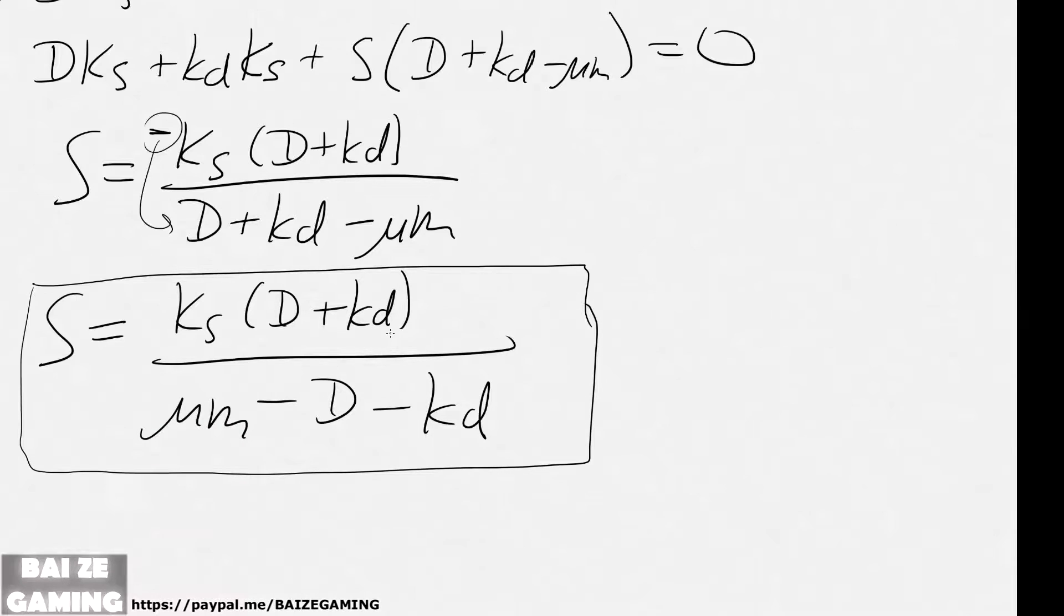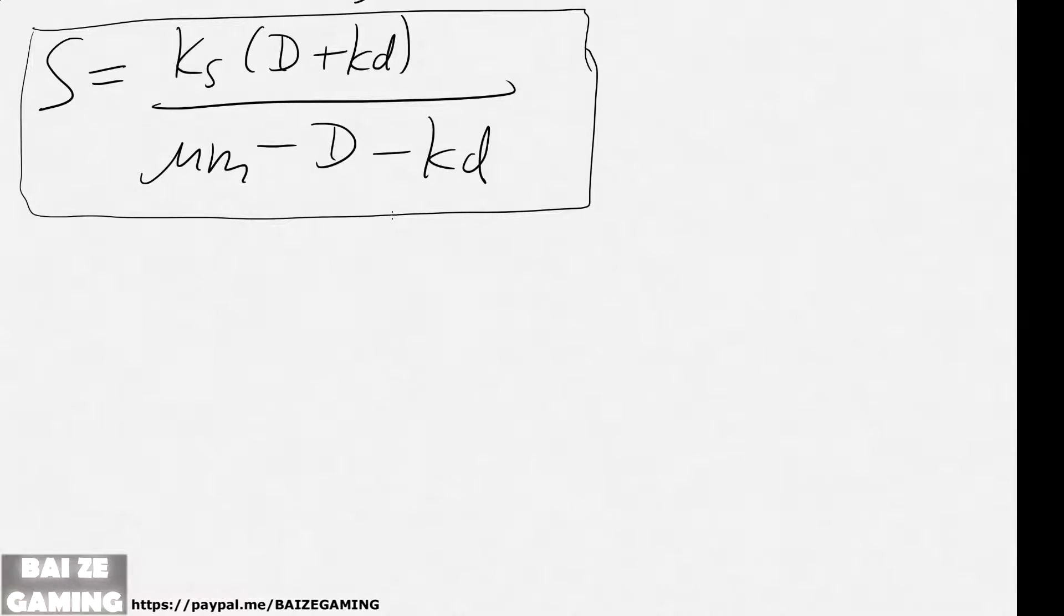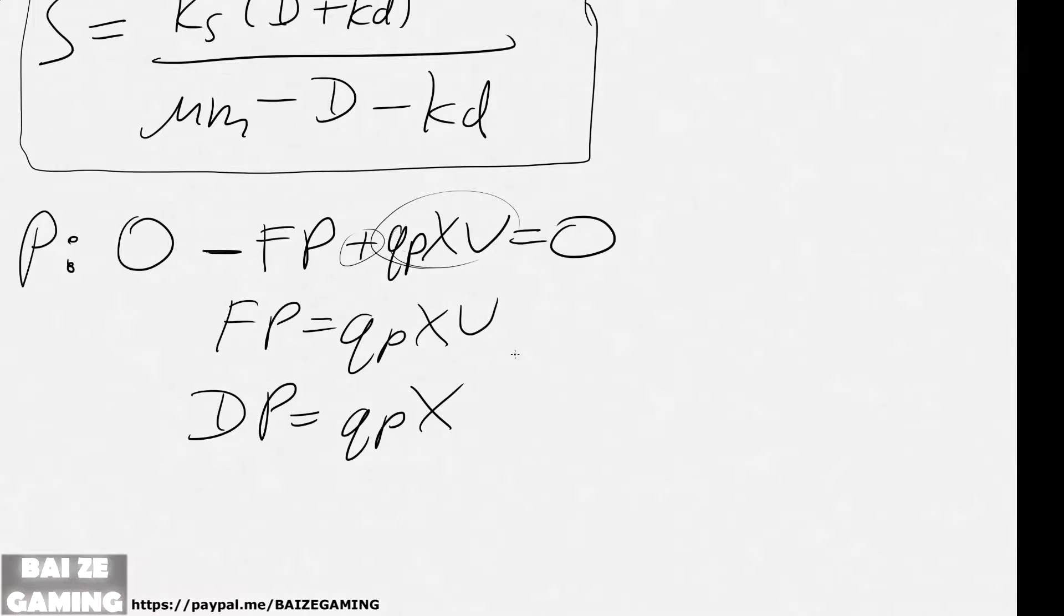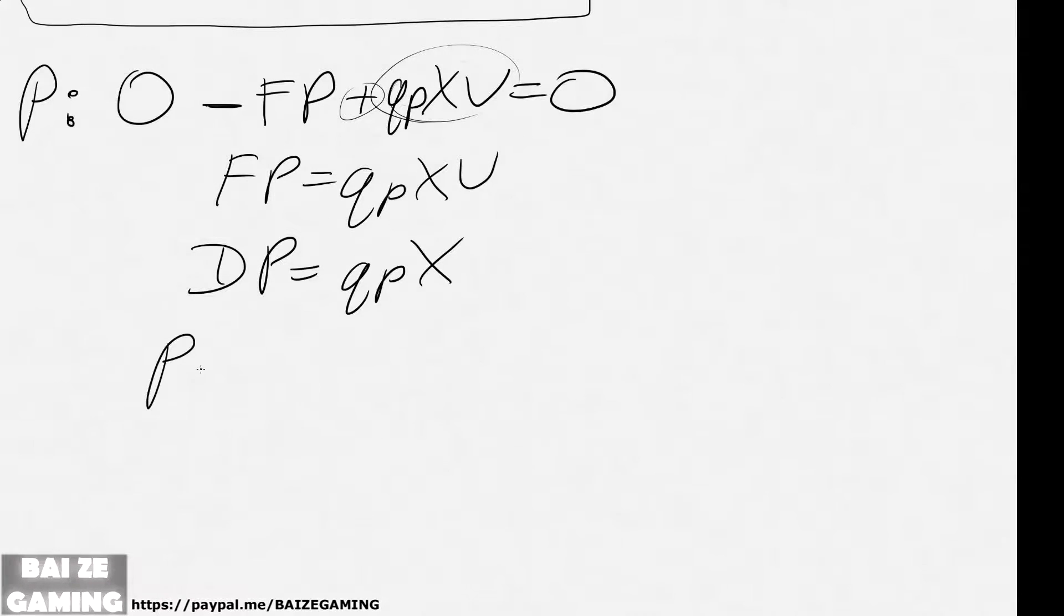So yeah, I mean, I'll just leave it like this for now. This is okay. And then we can do the P balance. No product in the inlet, and then the flow rate times P, plus this qP and XV equals zero. It's from the reaction, from it being made, so it's positive. What we can do is FP equals qP XV, then DP equals qP X, and then we just isolate for P.